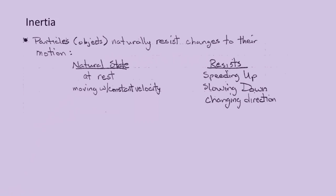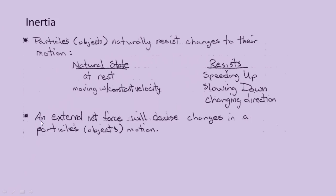Particles naturally resist changes to their motion. The natural state is for an object to be at rest or moving with constant velocity, and in this natural state, they resist changes. If you're at rest or moving with constant velocity, the types of changes you're resisting are speeding up, slowing down, and changing directions. An external net force will cause changes in a particle's or object's motion, but in the absence of that external force, the natural state will be for the object to be at rest or continue to move with constant velocity.